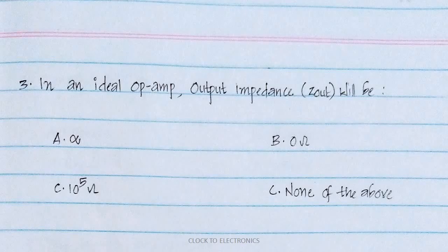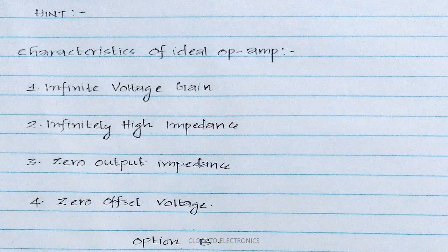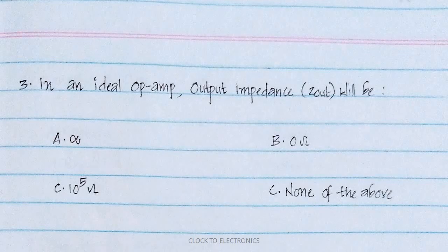The next question: the ideal op-amp output impedance — what is the value? Options are infinite, 0, 10⁵ ohms, or none of the above. The ideal op-amp characteristics are: voltage gain is infinity, input impedance is infinitely high, output impedance is zero, and offset voltage is zero. So option B — output impedance of ideal op-amp is zero — is the answer.